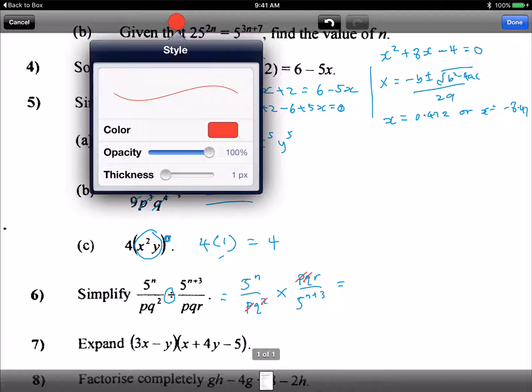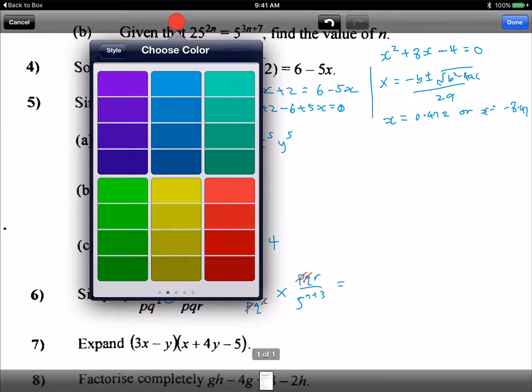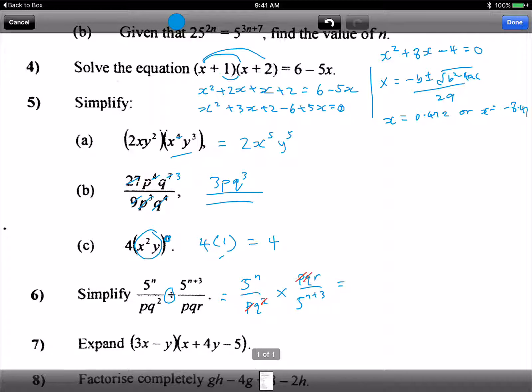All right let's write it out and see what happens, what else we can do. So it becomes 5 to the power n times r, right, because p cubed gone no more, divided by 5 to the power n plus 3 times q at the bottom. So it's still not good enough.